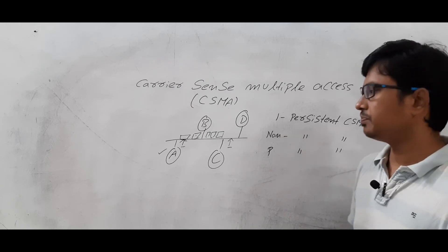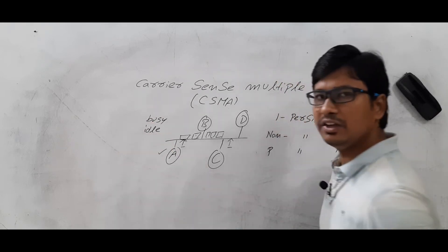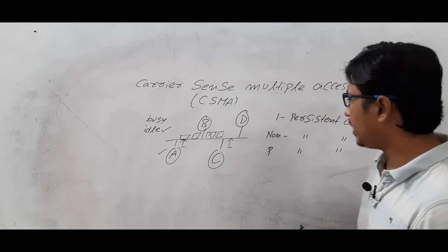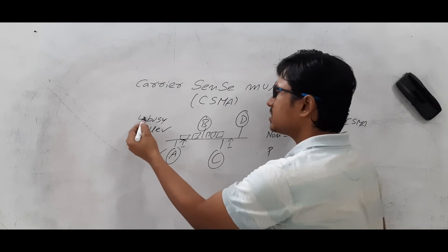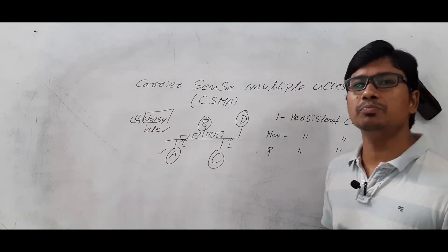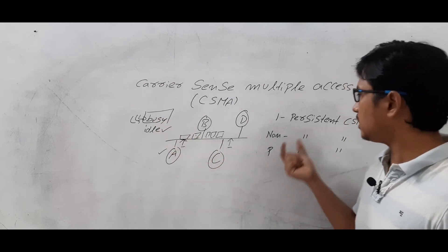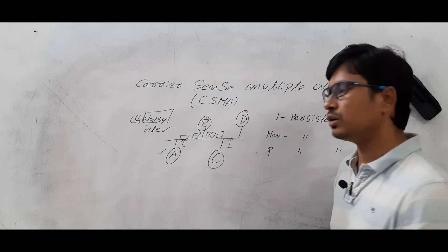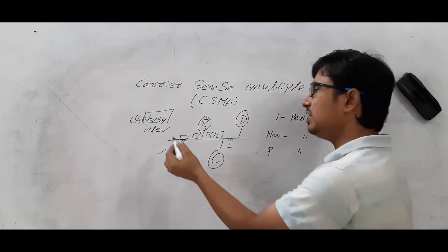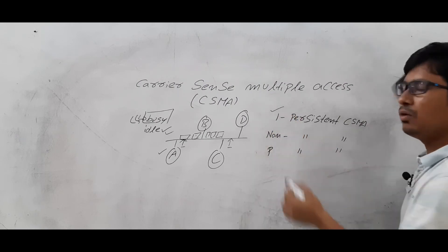Coming to the one persistent CSMA — if a node senses the channel, it is either busy or idle. If it is idle, it will start transferring the frames. If it is busy, it will keep on sensing until the channel will be free — it does busy waiting, similar to what the CPU does in programmed I/O in computer organization. In one persistent CSMA, if the channel is idle the node transfers data; if busy, it keeps sensing continuously until the channel becomes free, then immediately sends the packet.